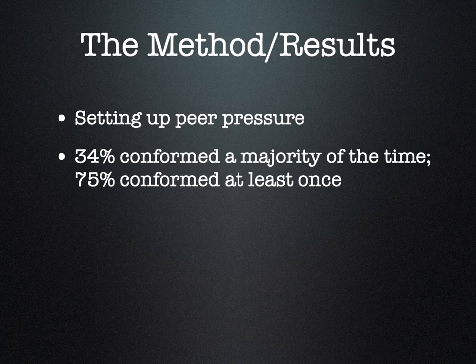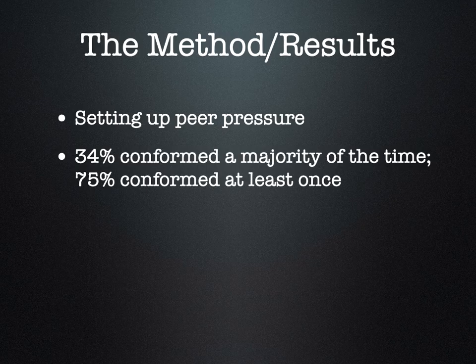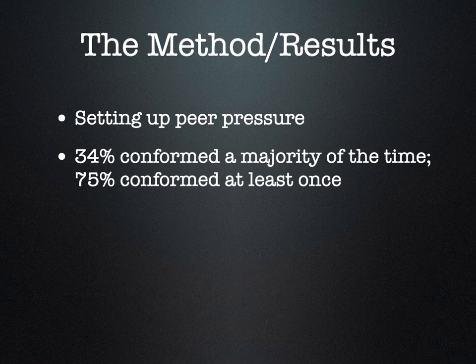So if your mom ever asks, 'Would you jump off a bridge if everybody else was doing it?' — psychologically speaking, a third of us are taking the plunge. A third of people conformed a majority of the time, and 75% of people — three out of four — conformed at least once. When they asked participants after the experiment (and you can perform these experiments, you just have to tell people you deceived them at the beginning), they said they did it because they didn't want to be different from the group.